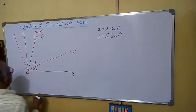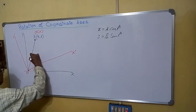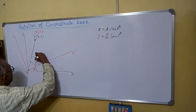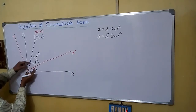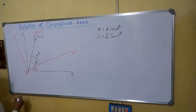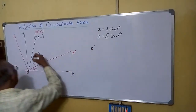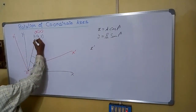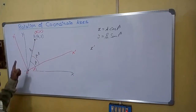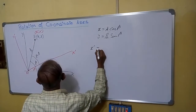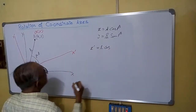Now see this angle with respect to the new axis. This angle becomes beta minus theta — this much was beta, and this much was theta, so this angle becomes beta minus theta. So what will be x-dash? The position of P and origin remains the same, so r remains the same. So x-dash equals r cos(beta minus theta).